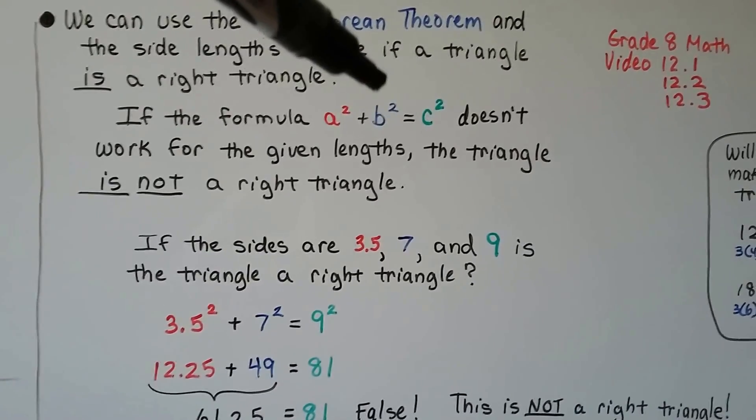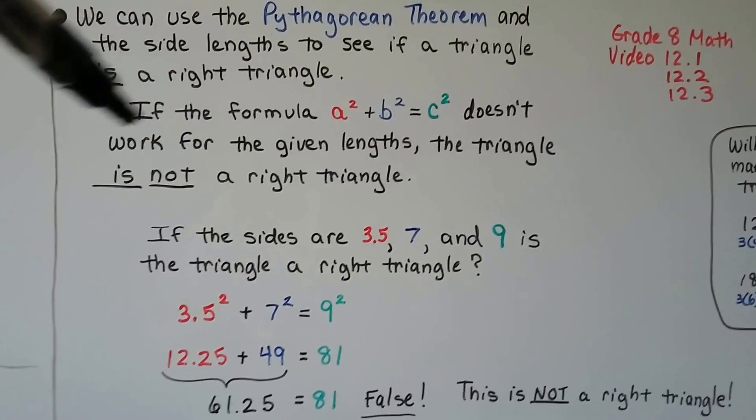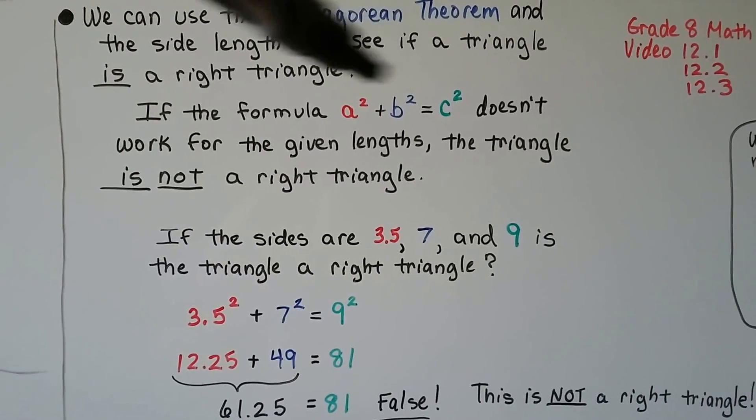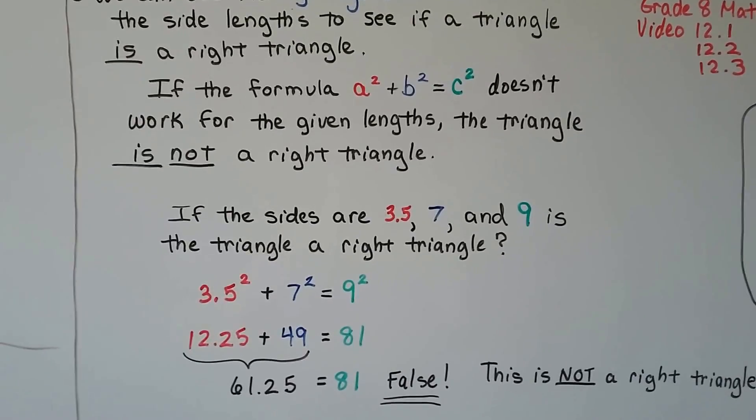If the formula a squared plus b squared equals c squared doesn't work for the given lengths, it doesn't make a true statement, then the triangle is not a right triangle.